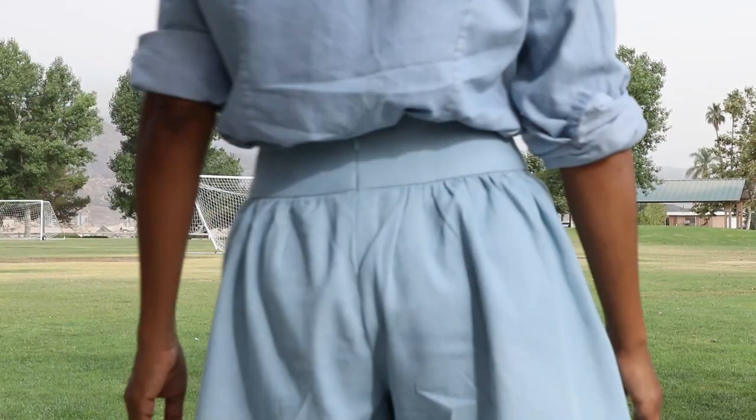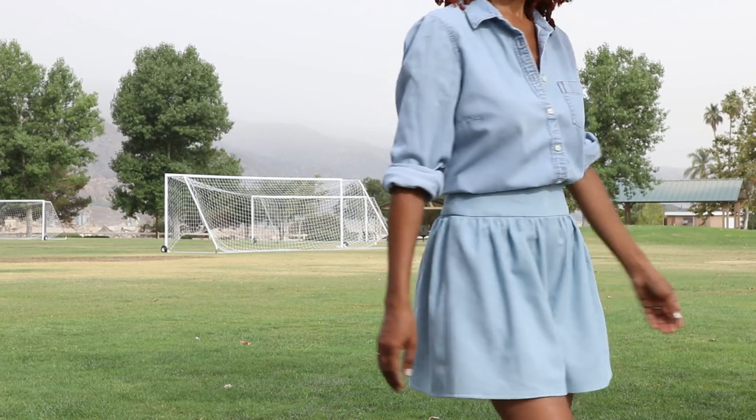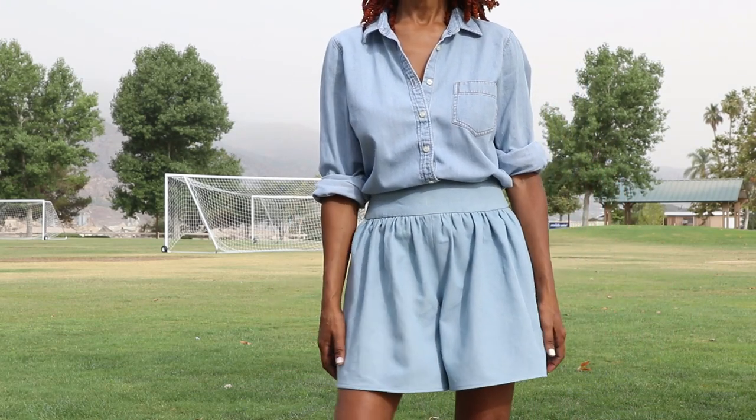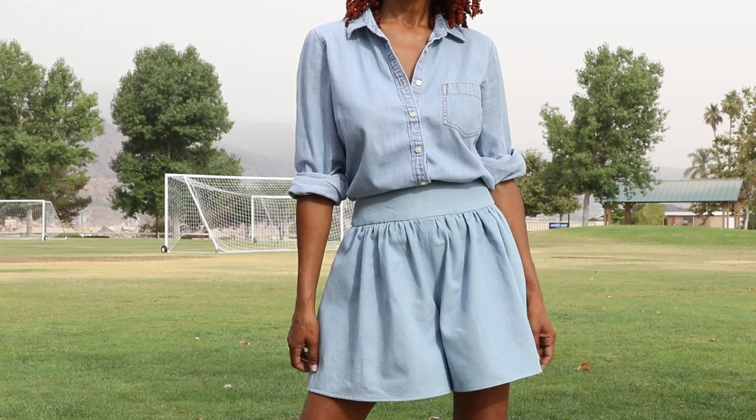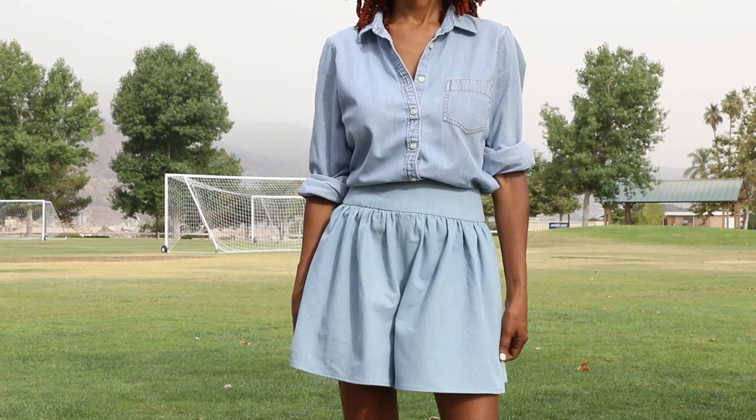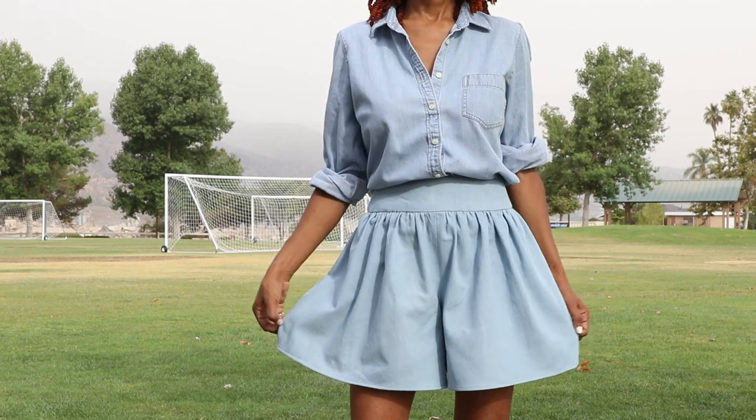I have another garment to share with you. I made Simplicity 9550 shorts. I made these before in a rayon fabric, and this time I decided to make it in a cotton denim. These shorts have gathers in the waist area and an invisible zipper in the back, and there are only five pattern pieces.